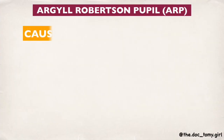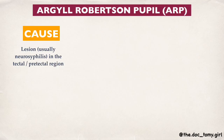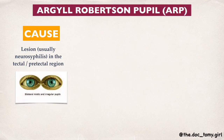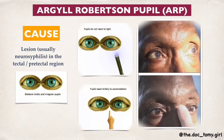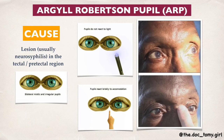The Argyll Robertson pupil is caused by a lesion — usually a neurosyphilitic lesion — in the tectal or pre-tectal region. The clinical features are: pupils are bilaterally asymmetrical, small, and irregular in size. The pupils will not react to light — the light reflex is absent — but the pupils will react briskly to accommodation. The accommodation reflex is present, which can be remembered by the abbreviation ARP from Argyll Robertson Pupil: Accommodation Reflex Present. The pupils also show poor dilatation with the use of mydriatics.